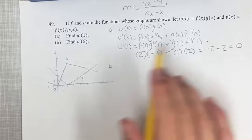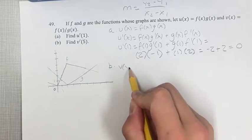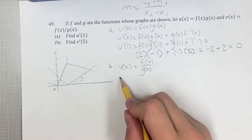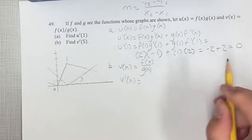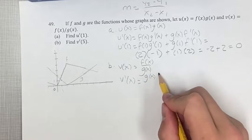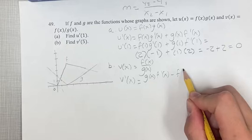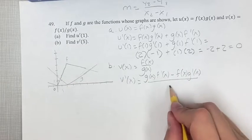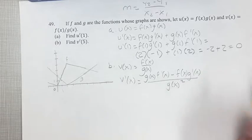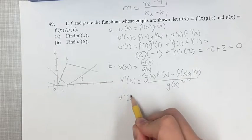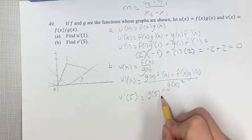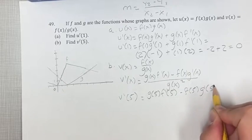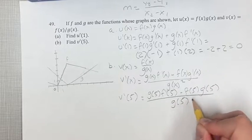Part b is a bit trickier because v of x equals f of x divided by g of x, so we use the quotient rule. The derivative is the denominator times the derivative of the numerator, minus the numerator times the derivative of the denominator, all divided by the denominator squared. Calculated at x equals 5, this is g of 5 times f prime of 5, minus f of 5 times g prime of 5, over g of 5 squared.